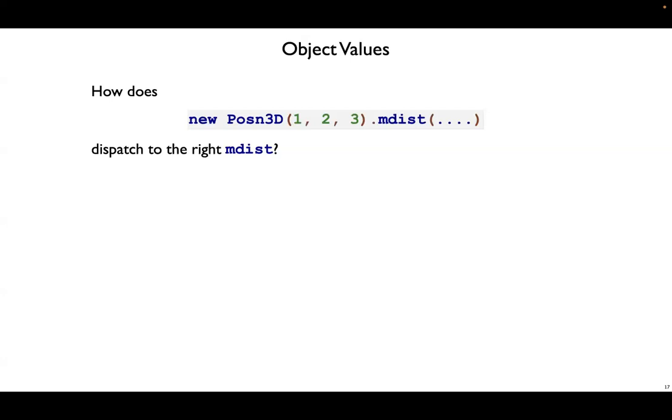Now that we have classes, we can do things a little bit differently and a bit more simply. Instead of storing the method code inside the object, where every Posn3D object has a copy of the mdist method, we can instead store that in the class. So now every class will have copies of the methods, and then every object can point back up to that class.